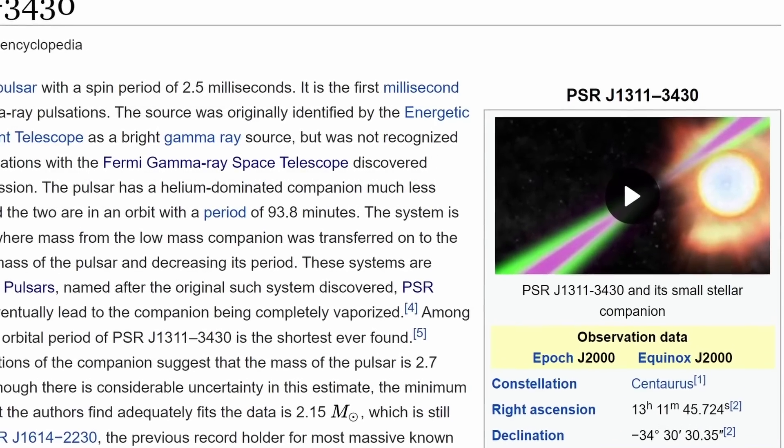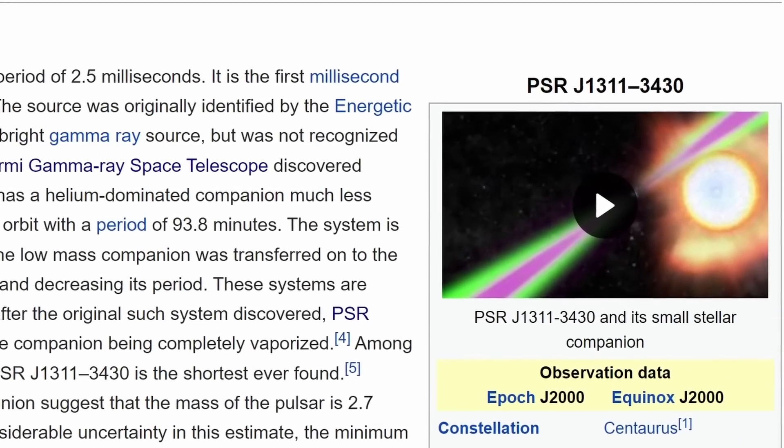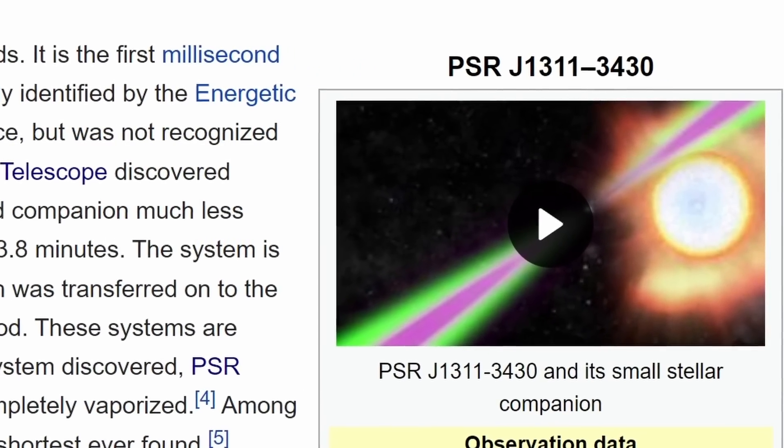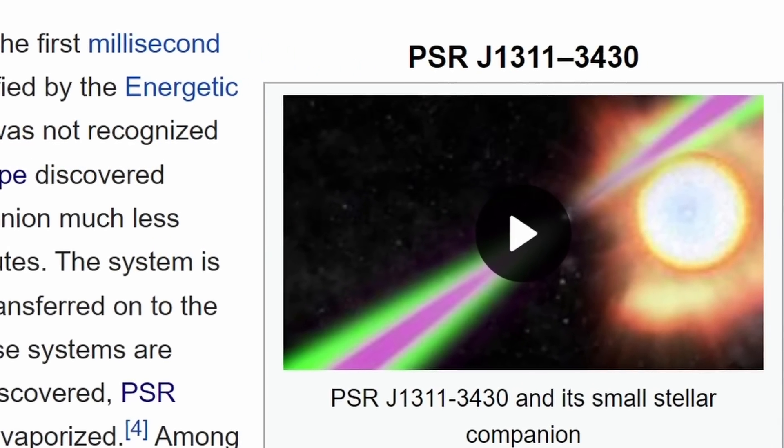And some of these systems, like this one right here discovered in 2012, are generally already super extreme. For example, here the neutron star is already at its mass limit.